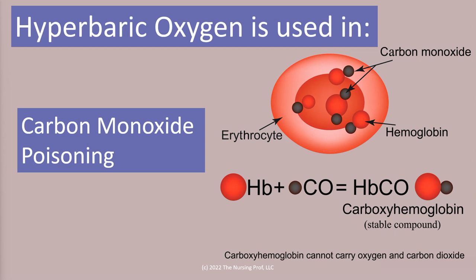There are many things that hyperbaric oxygen therapy is used for. One example is carbon monoxide poisoning. In carbon monoxide poisoning, instead of the hemoglobin molecules binding oxygen, they bind carbon monoxide and we form carboxyhemoglobin. That's a bad thing because if carbon monoxide is occupying the oxygen binding site, then oxygen can't bind. So if we increase the pressure of oxygen in the bloodstream with hyperbaric oxygen, it helps to knock those carbon monoxide molecules off of the hemoglobin so that oxygen can bind.